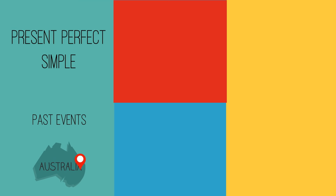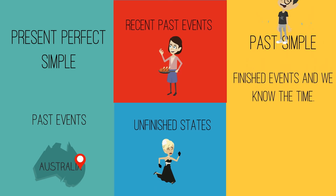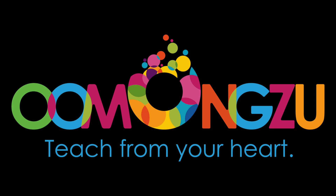To summarise: we use the present perfect simple for past events, recent past events, and unfinished states. We use the past simple for finished events where the time is known. If you've enjoyed our video, please visit our website at umonzu.com for more videos, subscribe to our YouTube channel, and like, comment, and share our videos. Make sure you tell your friends and colleagues about Umonzu.